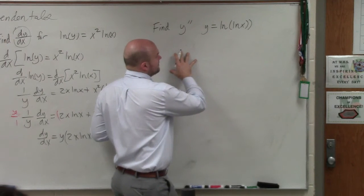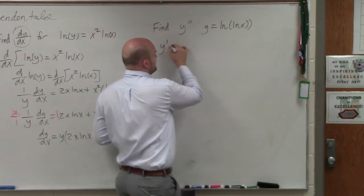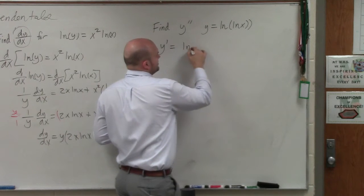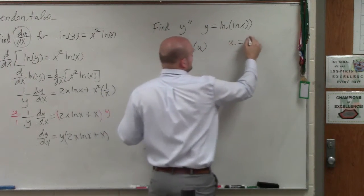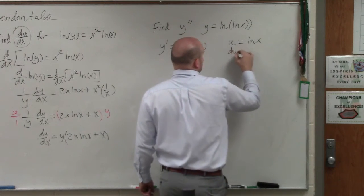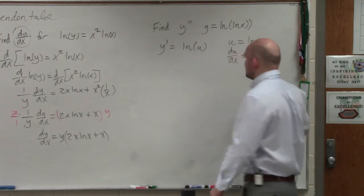So again, just using the derivative here to find the first derivative. Basically, you can see that we're taking ln of u, where u is equal to ln of x. So du dx equals 1 over x.